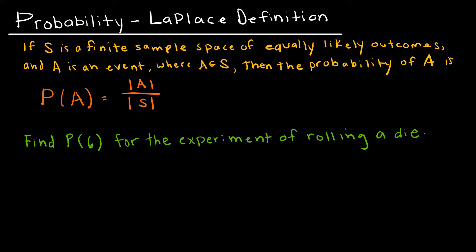Laplace's definition is specific to events that are equally likely, have equally likely outcomes. So let's talk about terminology. First, we're saying S is a finite sample space. Finite means that it's countable, it ends, it's not infinite.